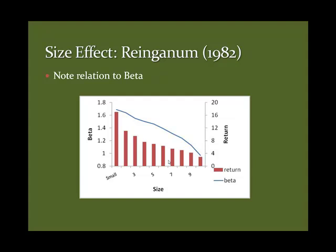In the meantime, around 1980, Banz and Reinganum found a huge size effect. Look at these bars — these are annualized returns. Lowest decile stocks: 16%. Highest decile stocks: 3%. That's a 16% return premium for small cap. Small cap firms clearly had higher beta, but it wasn't sufficient to explain this — so that was a real puzzle.